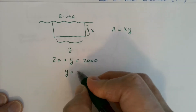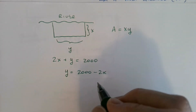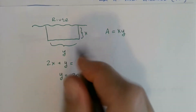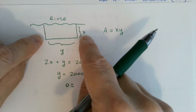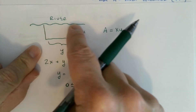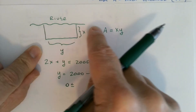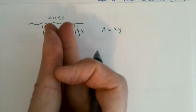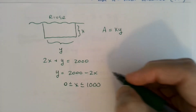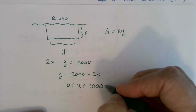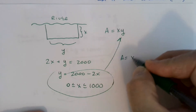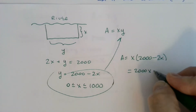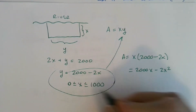The domain for x is still [0, 1,000] — at the extremes you'd have fencing running along the riverbank or just two perpendicular fences of 1,000 feet each. Substituting y = 2,000 − 2x into the area formula: A(x) = x(2,000 − 2x) = 2,000x − 2x², valid for x ∈ [0, 1,000]. Taking the derivative: A'(x) = 2,000 − 4x, which equals zero when x = 500.